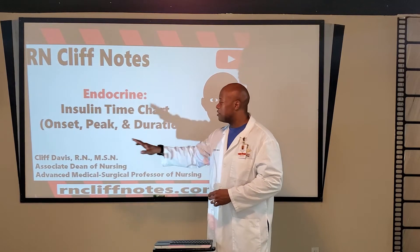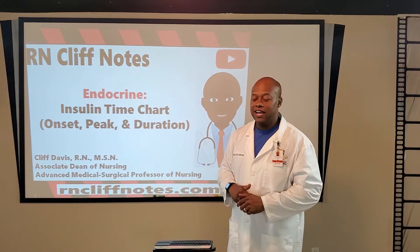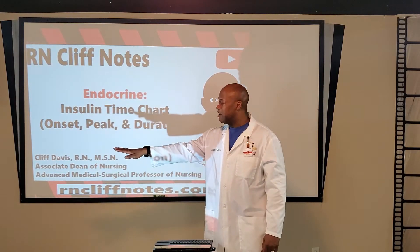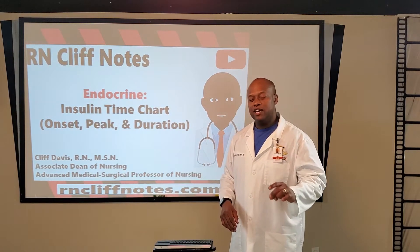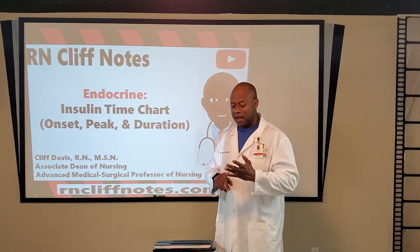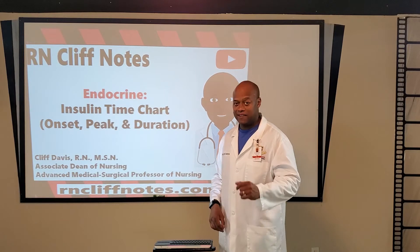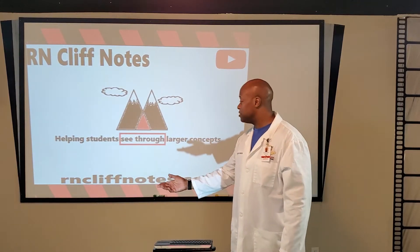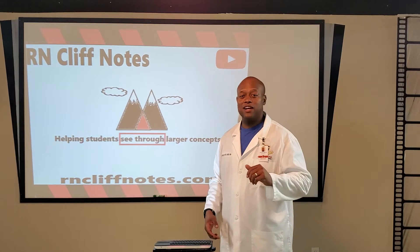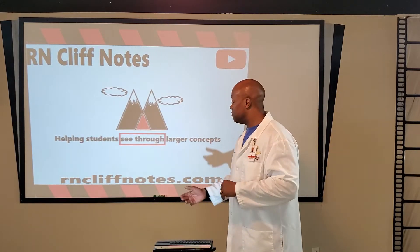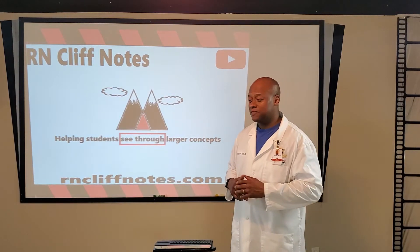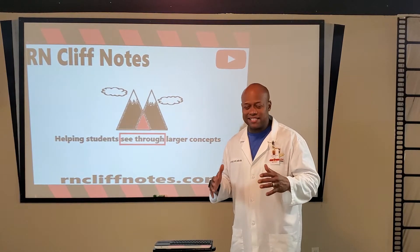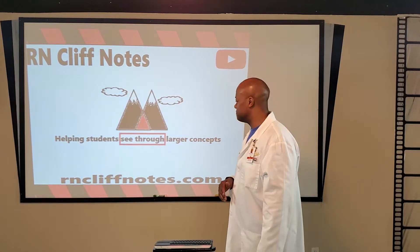Today we want to talk about the insulin time chart — a little intimidating at first glance, but we want to figure out a way to learn the onset, peak, and duration for the three main types of insulin: rapid, regular, and intermediate acting insulin. At R.A. Cliff Notes, we're helping students — and professionals — see through larger concepts and find the secret sauce to understanding them.